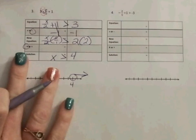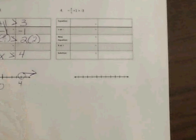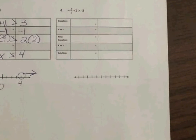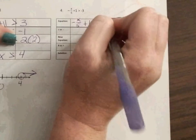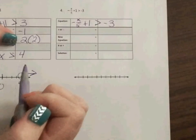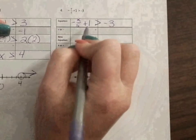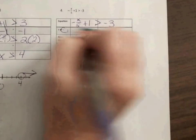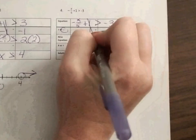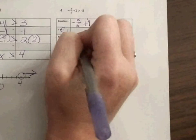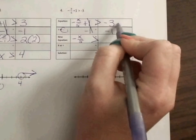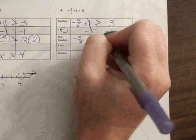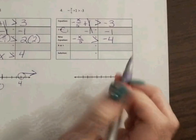Okay. So our next example, we have negative x over 5 plus 1 is greater than negative 3. So I'm going to write it up here. Negative x over 5 plus 1 greater than negative 3. Okay. So I'm going to ignore the fraction for just a minute. They have a plus 1. So I need to subtract 1. That zeros that out. That leaves me with a negative x over 5 is greater than. And a negative 3 minus 1 more is a negative 4.